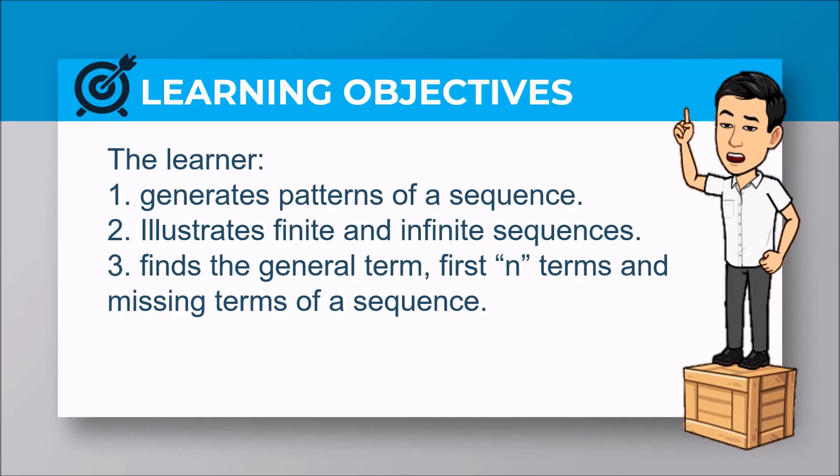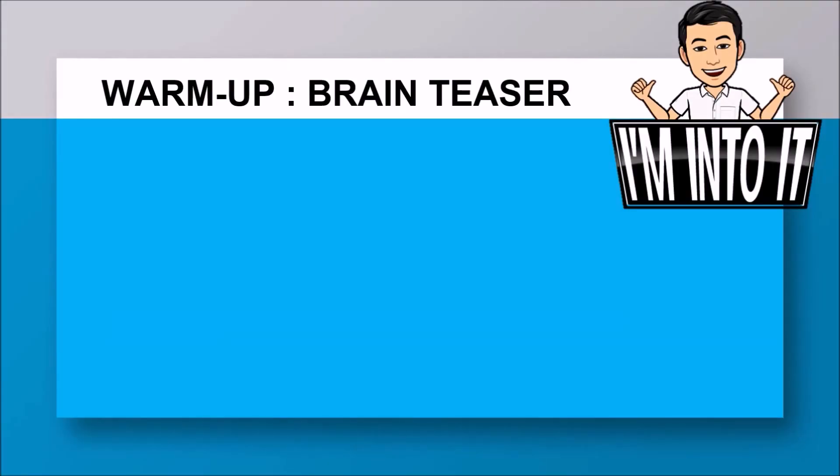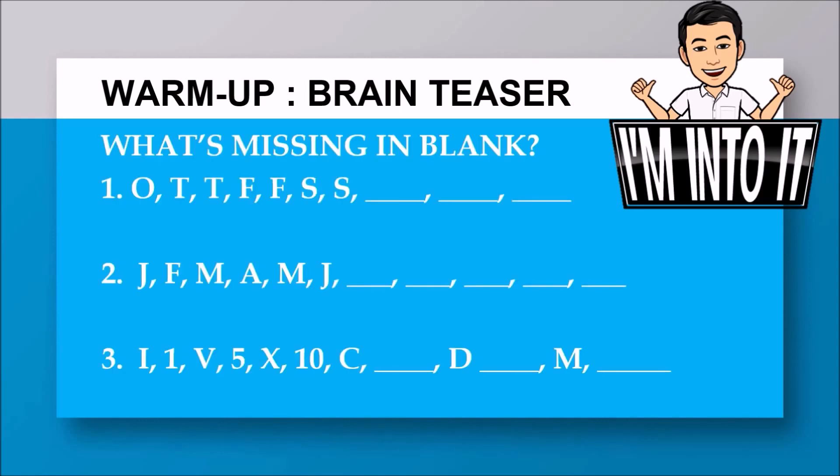Let us start with the brain teaser. You are about to find what are missing in the blank. Pause the video and start solving these logic problems. The answers for number one, if you know how to count, are E, N, T because they are the initials of our first ten counting numbers.